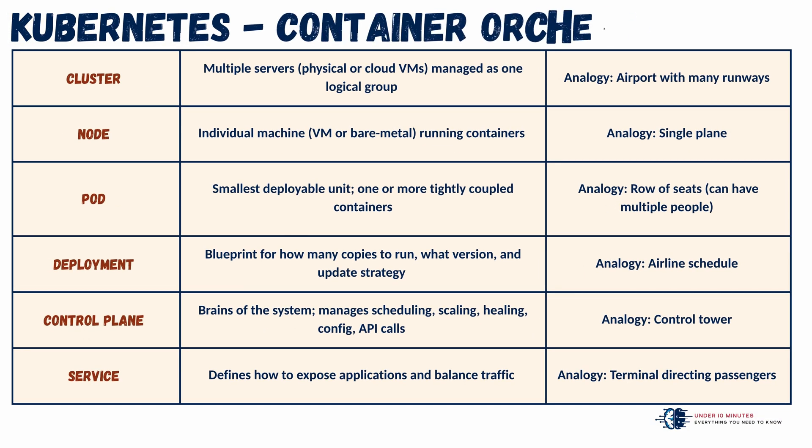This is where Kubernetes comes in — the solution to orchestrating container deployments at scale. Acting as a sophisticated controller, Kubernetes turns collections of servers into a unified cluster, scheduling and balancing workloads as needed. Nodes are the individual machines. Pods are the basic units, often containing one or several tightly linked containers. Through deployments, you define how your application should run, how many copies, and how updates should roll out. The control plane ensures the real world continuously matches your declared intent. Services expose your applications with stable endpoints, automatically routing traffic and handling failures in the background.